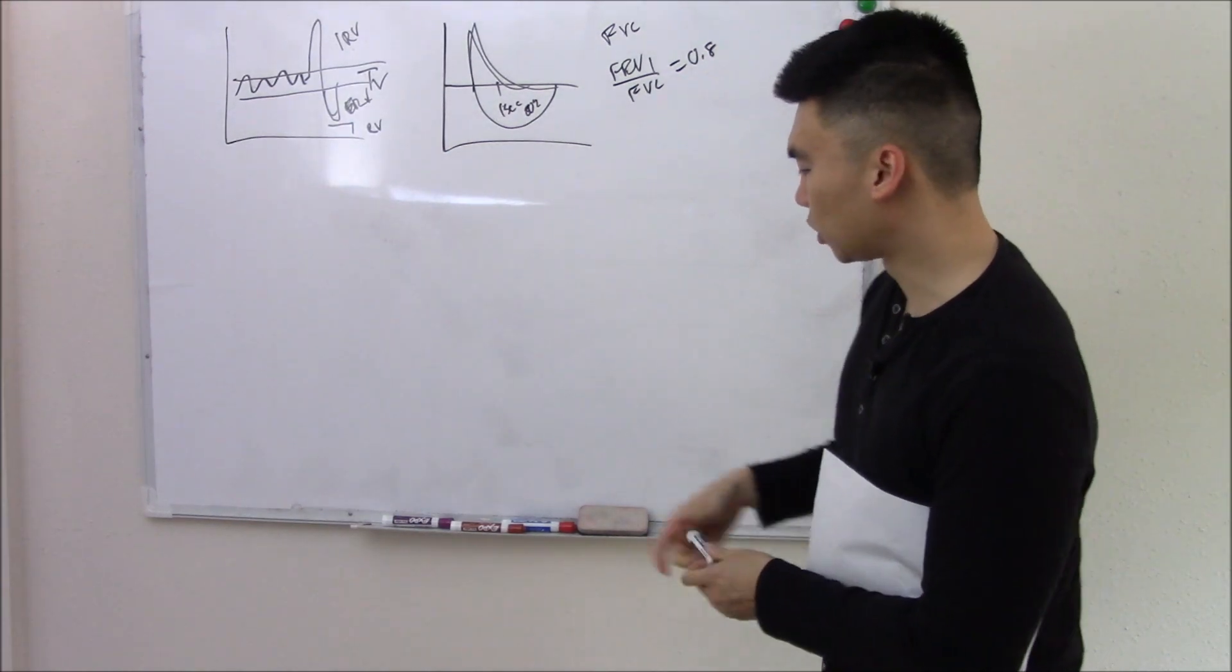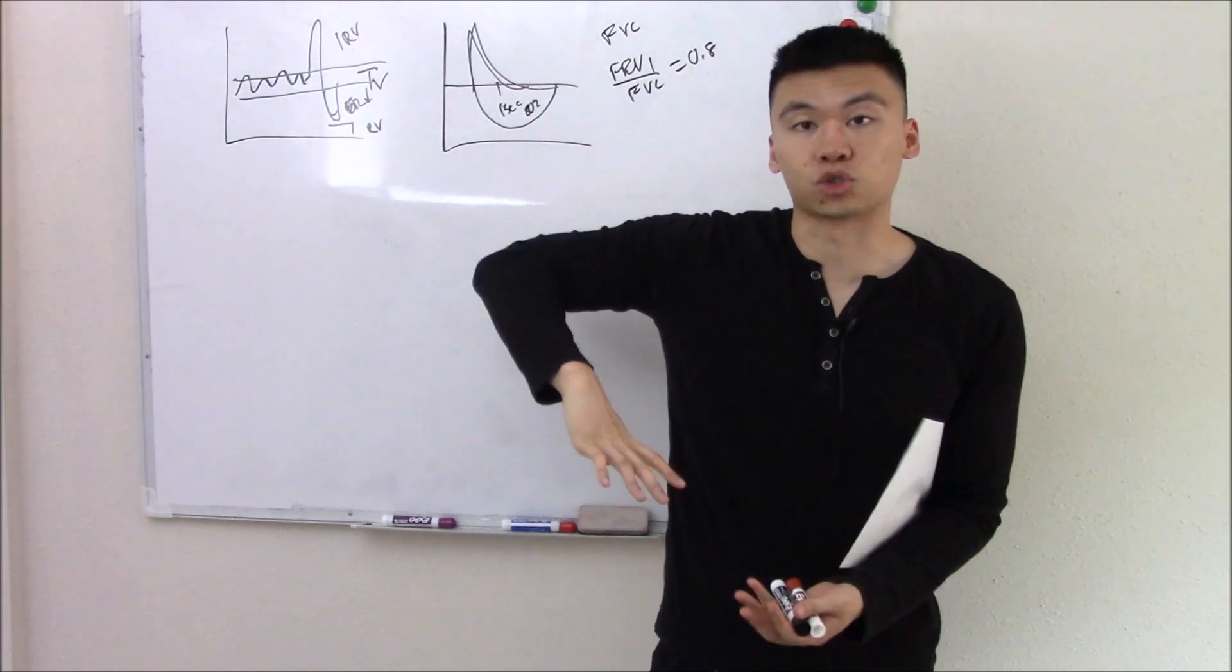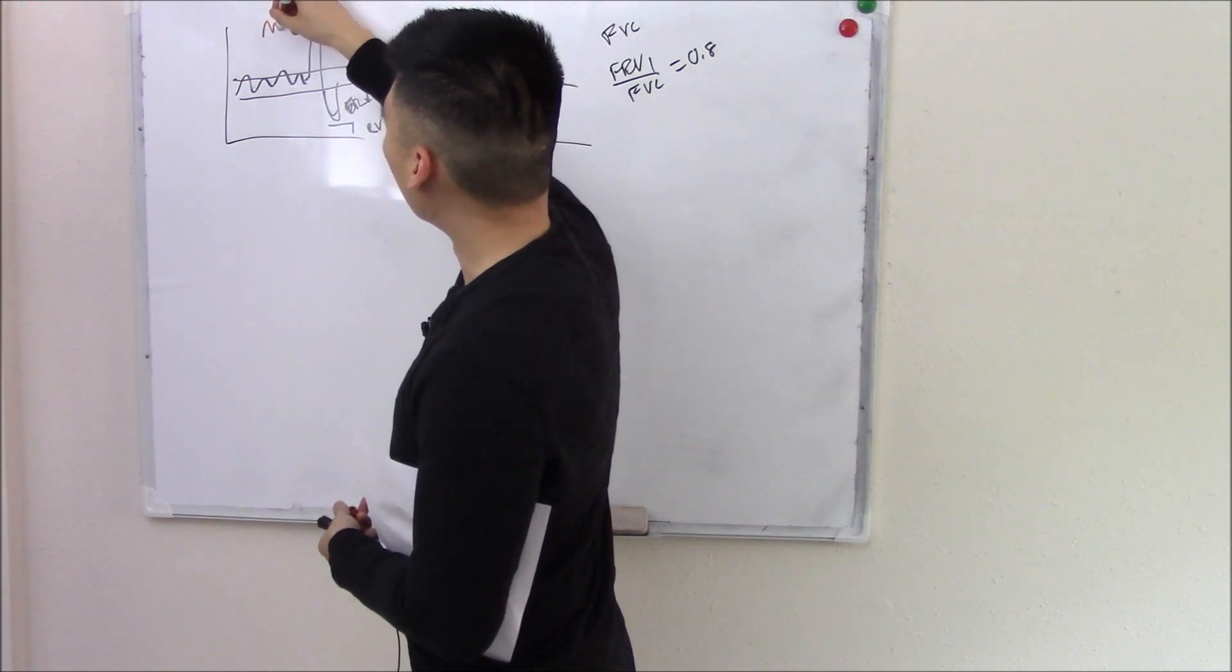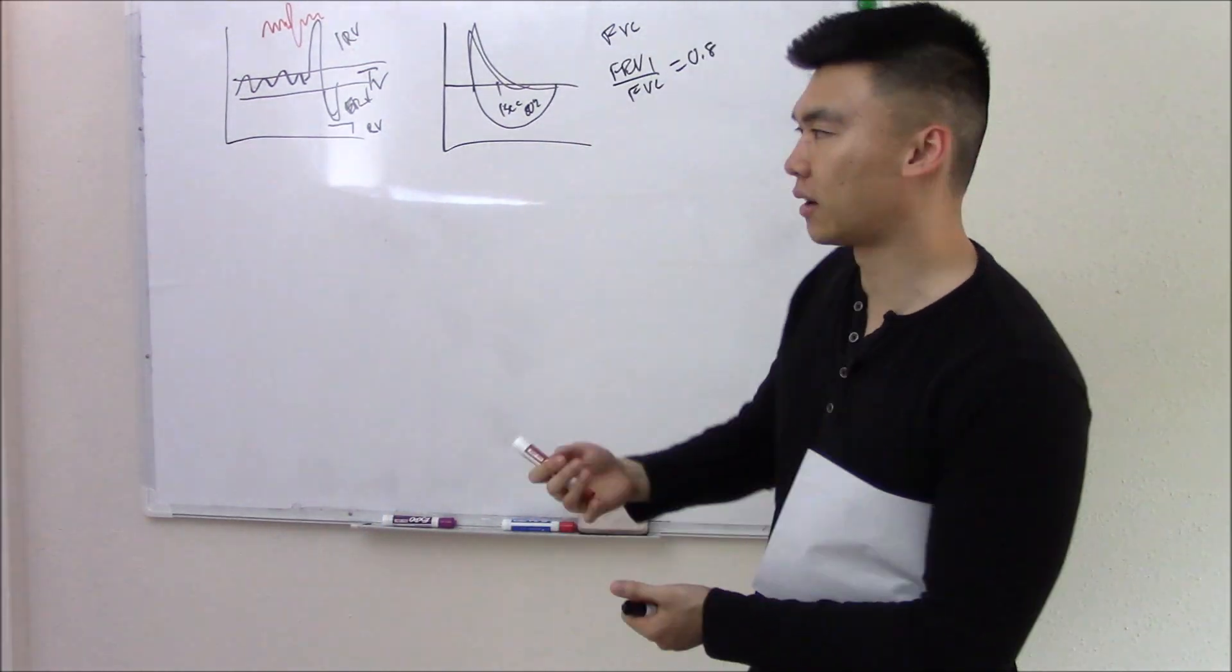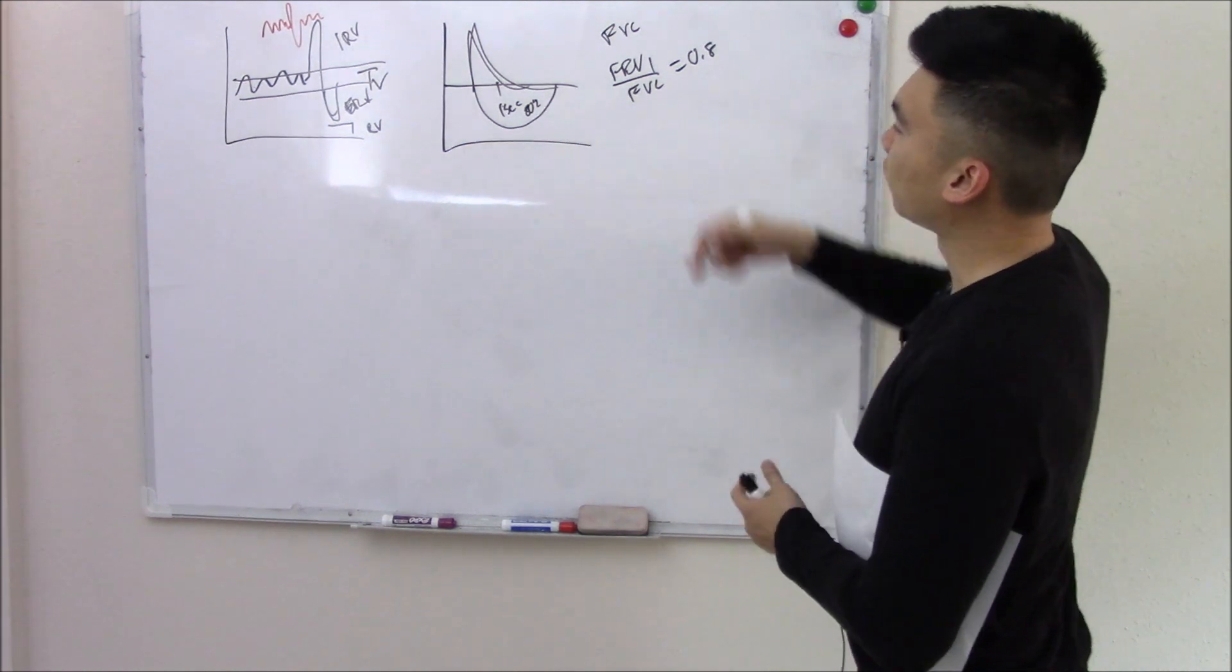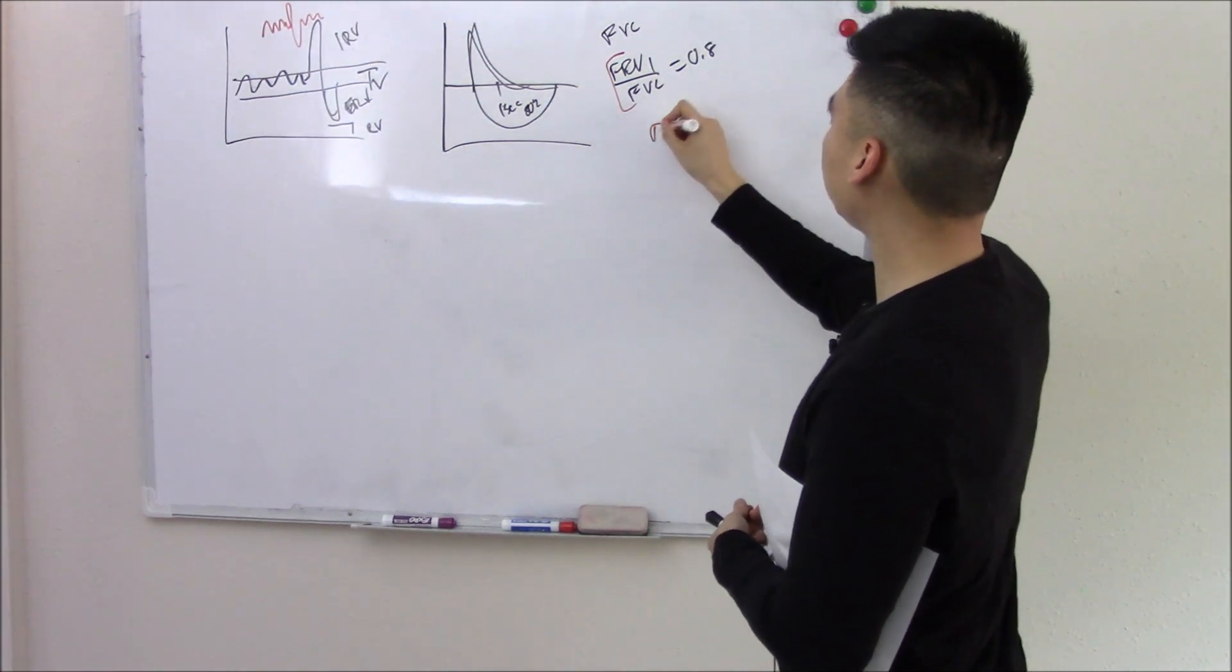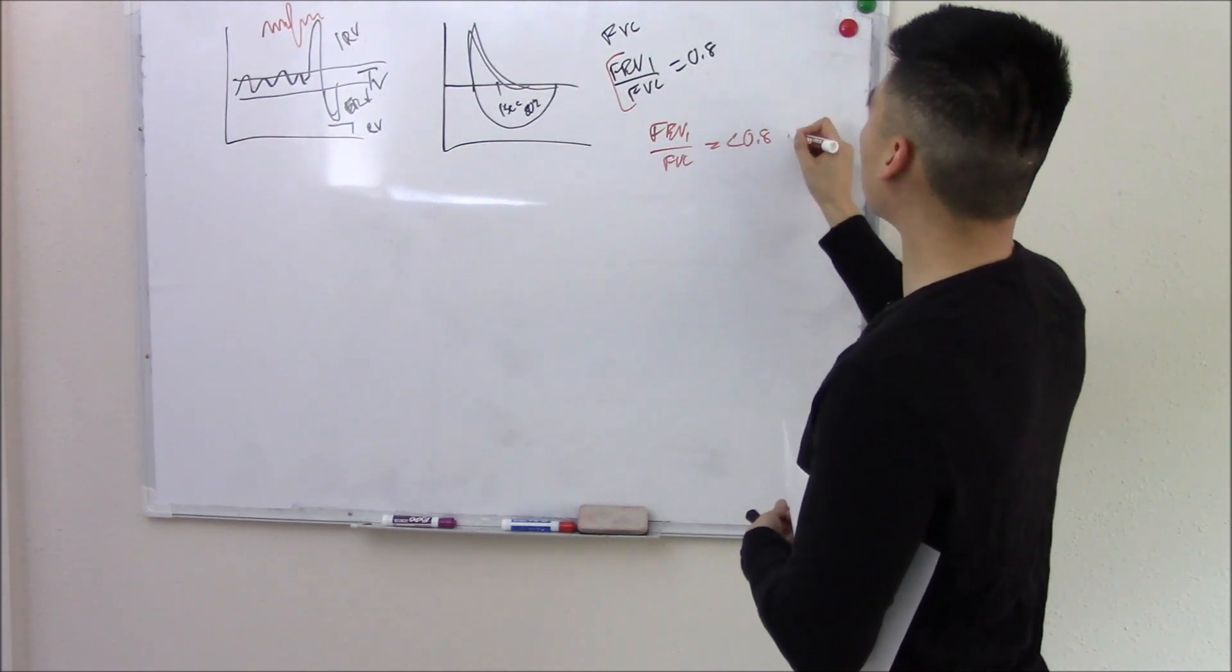When we talked about obstructive lung diseases, we said that it can affect these. Obstructive lung disease, you had a blockage and that caused air to get trapped. You couldn't breathe it out. Because you have air trapping, you have more volume, increased lung volume, increased residual volume. When we talked about forcefully breathing it out, we said that you couldn't forcefully breathe it out because you had an obstruction. And so the ratio was less than 0.8. That was a hallmark.